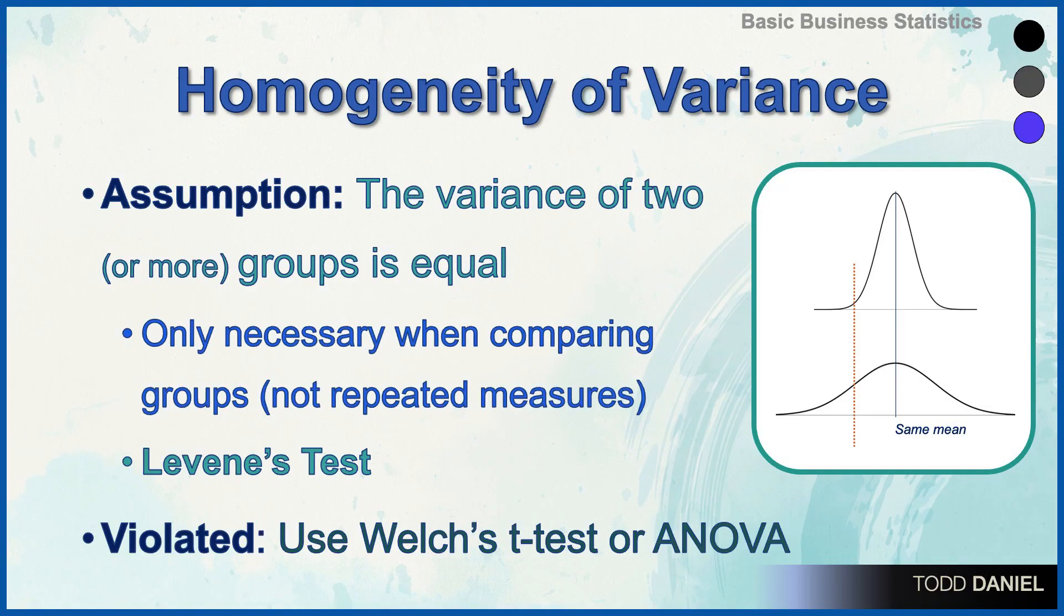It is only necessary to test for this assumption when you are comparing groups, such as using an independent samples t-test or a one-way ANOVA. It is not necessary to test for homogeneity of variance when you are using repeated measures, such as a paired t-test or repeated measures ANOVA.